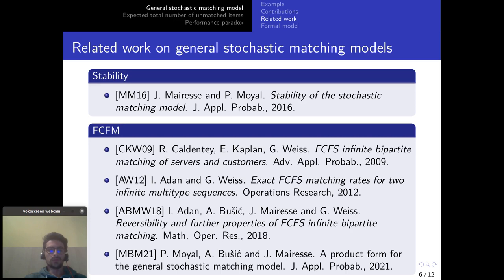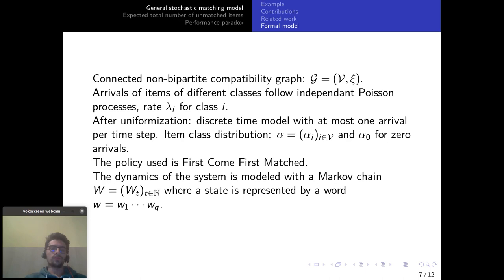Let me now formally define the model. So we have a connected non-bipartite compatibility graph G with the different classes of items represented by the nodes V and the compatibilities between those classes represented by the edges between those nodes called the Xi.